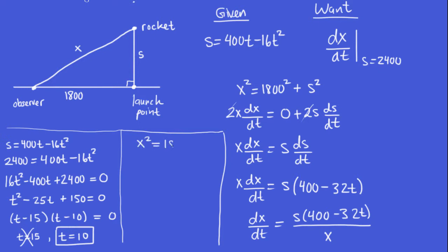So in our main equation here, x² = 1800² + s². We want to know what x is when s is 2,400. So let's put that in. And if we work that out, 1800² + 2400², and then we take the square root of that, x turns out to be 3,000, a nice whole number.